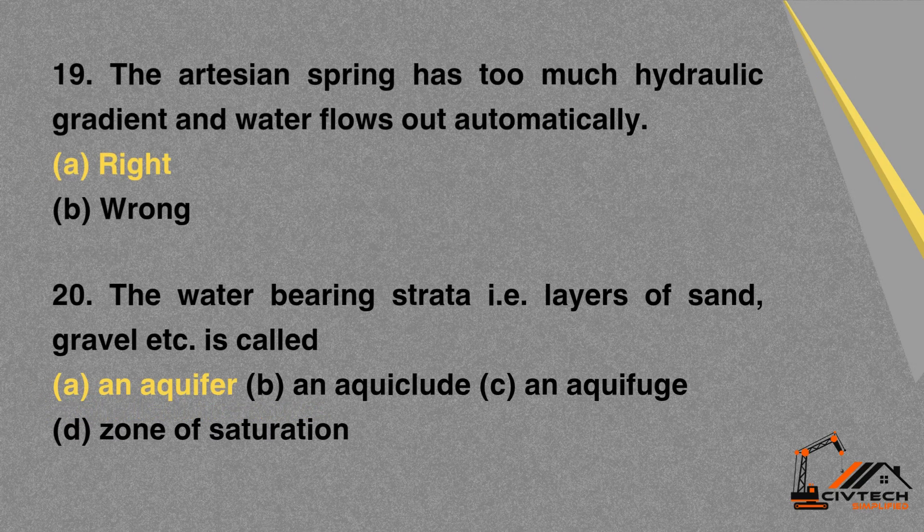MCQ 19: The artesian spring has too much hydraulic gradient and water flows out automatically. A. Right. Correct option: A. Right.